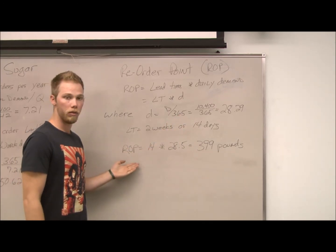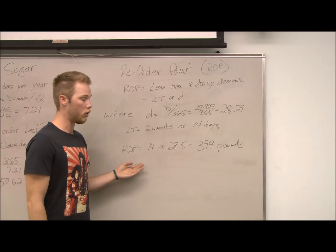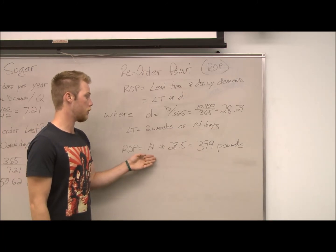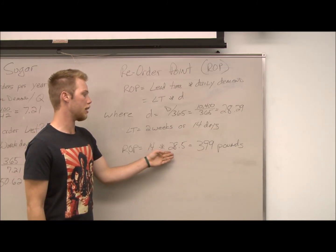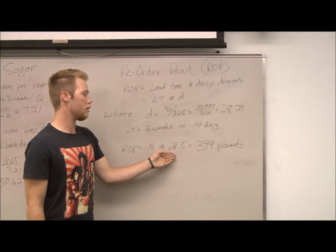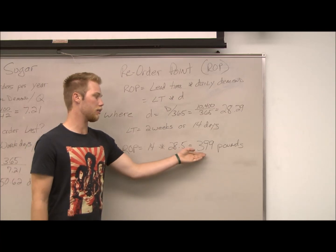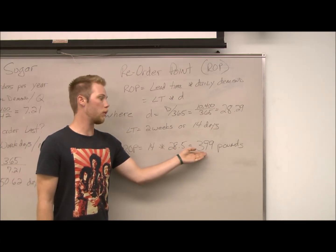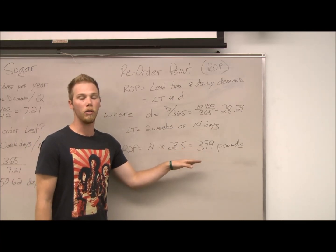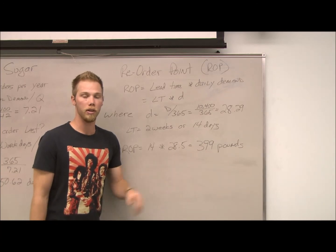To calculate the reorder point, we take the 14 days and multiply that by 28.5, and that gives us 399 pounds. That is the inventory level at which it is time to reorder.